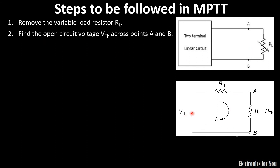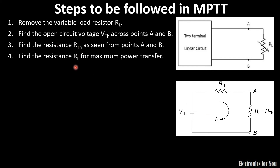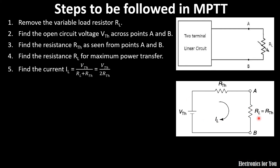The third step is to remove all voltage sources and current sources — replacing them with their internal resistances. Voltage sources are short-circuited and current sources are open-circuited. Then we measure the resistance between the two terminals A and B, which is RTH, the Thevenin equivalent resistance. For maximum power transfer, you should first know Thevenin's theorem. RTH equals RL, as that is the condition stated by the maximum power transfer theorem.